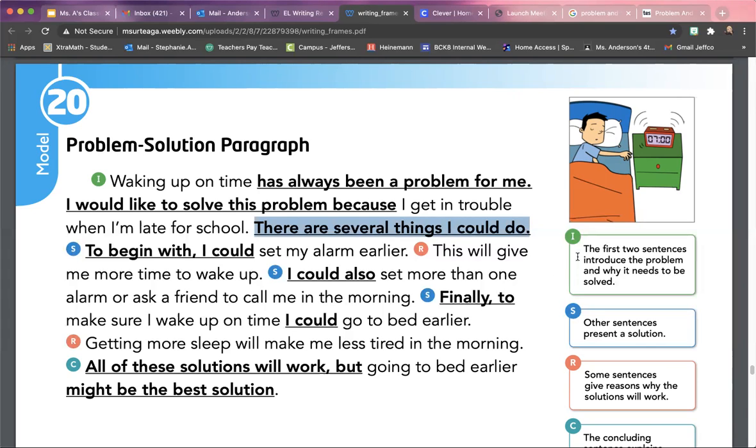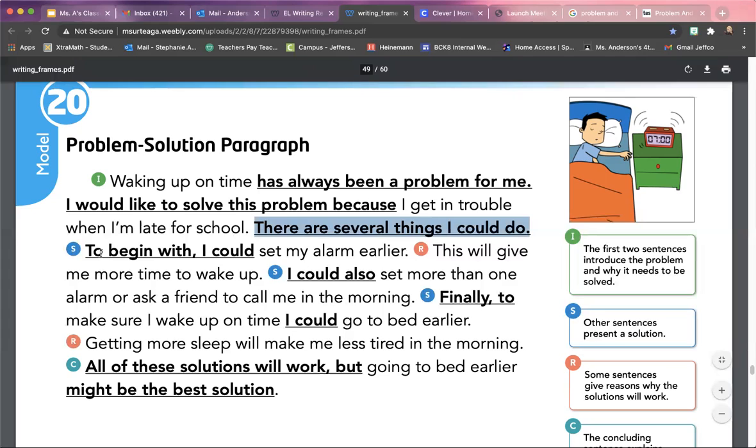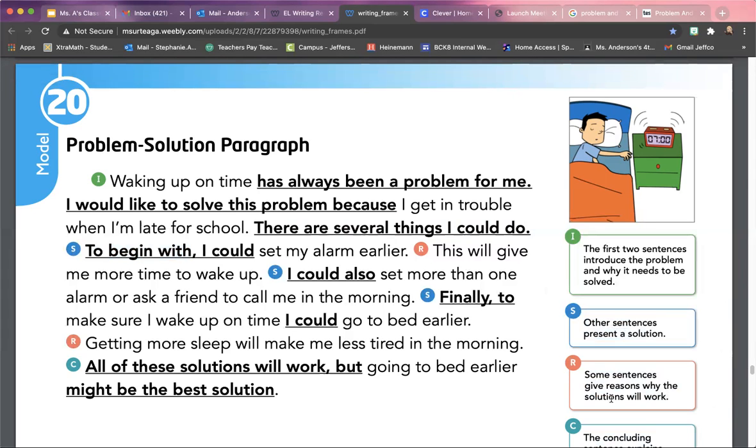So and also, like we've been working on transition words - to begin with. Okay, here's a possible solution. And then he gives reasons. If you see down here in the bottom there's this R with the orange circle, these are reasons why the solutions will work. So he doesn't just say I could set my alarm earlier, next day could ask a friend to call me, then I could go to bed earlier. He gives reasons why his solutions will work, so it's really supporting it. He's not only solving his problem, but he's also saying why this would help him.